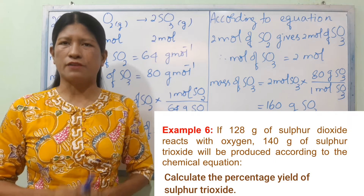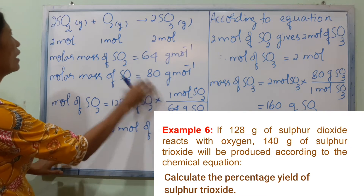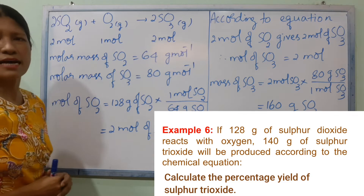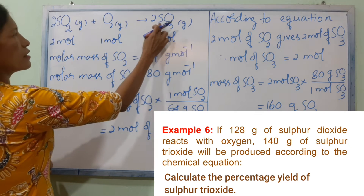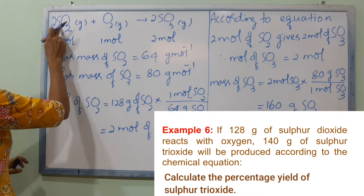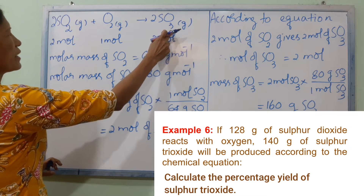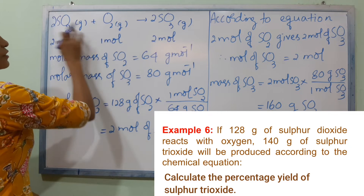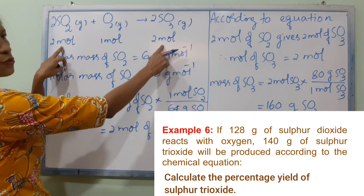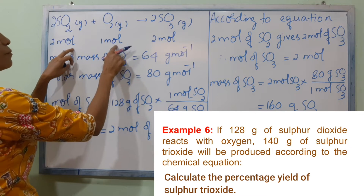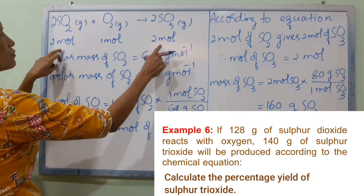The equation is: SO2 plus O2 gives SO3. Balancing the equation: 2SO2 plus O2 gives 2SO3. The molar ratios are 2 moles SO2, 1 mole O2, and 2 moles SO3. We now have a balanced equation for SO2 and SO3.